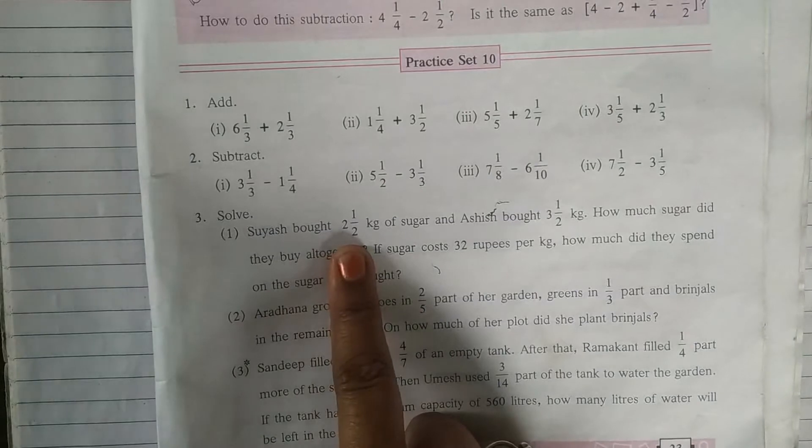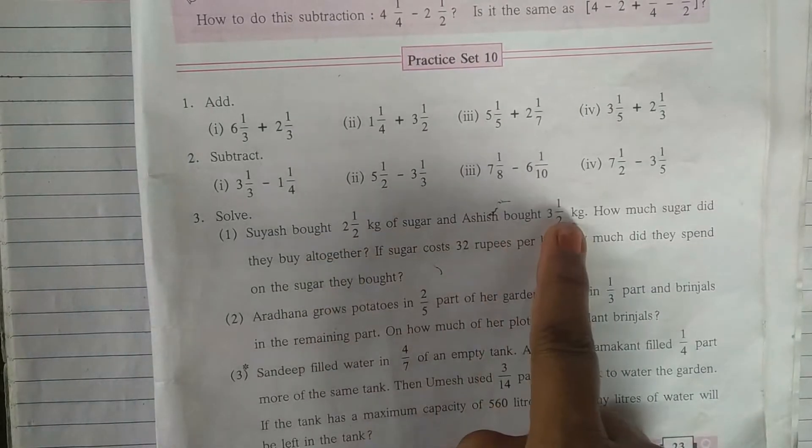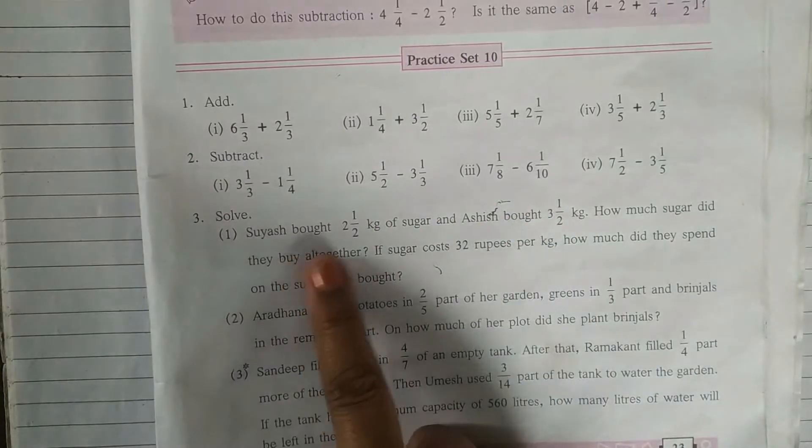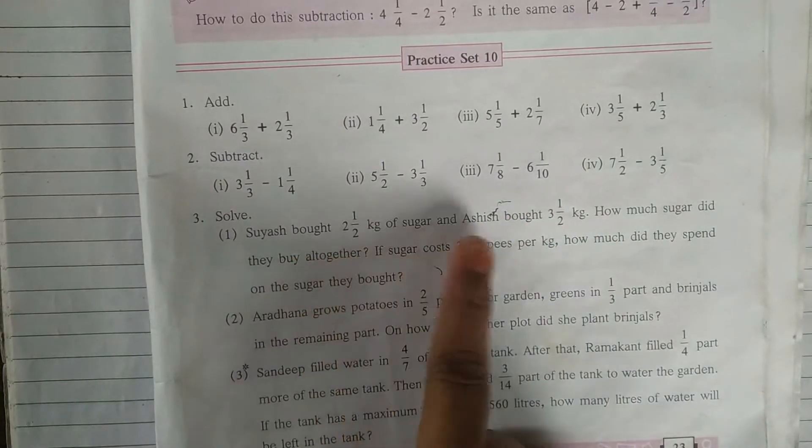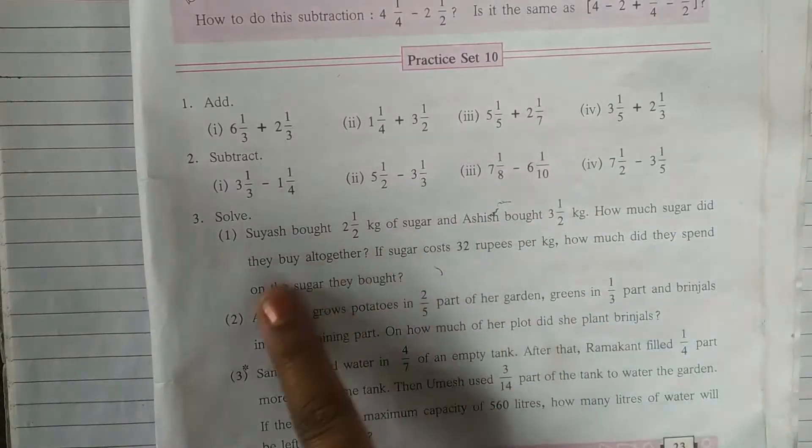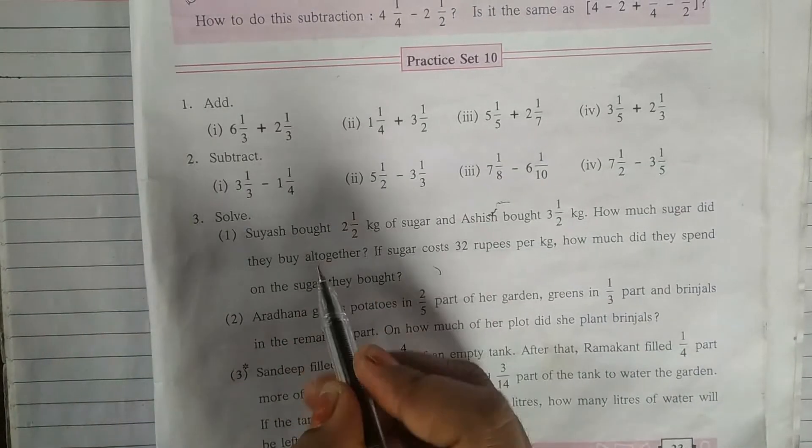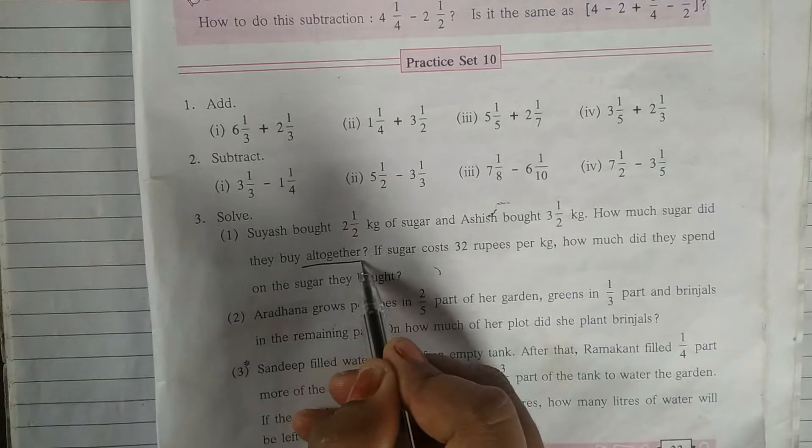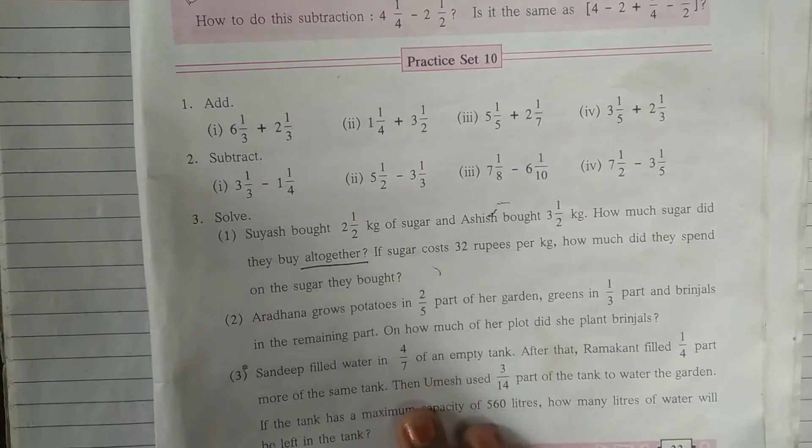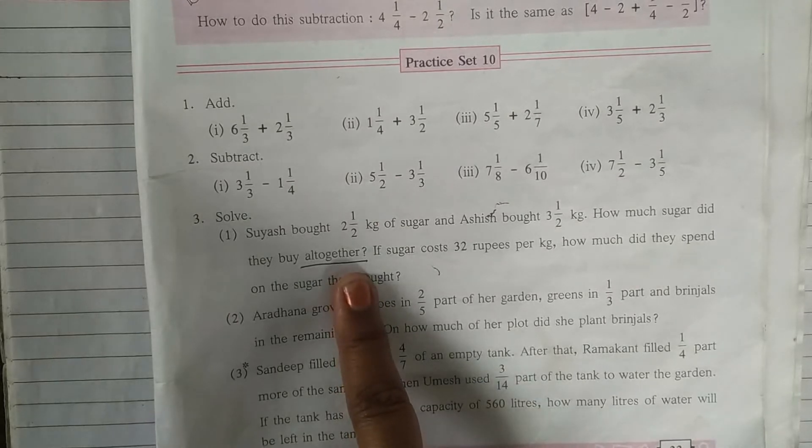Suyash brought 2 and half kg of sugar and Ashish bought 3 and half kg. How much sugar did they buy all together? See student in these word problems, you have to underline some important words which give you idea what calculation should be done for them. That's all together means here we have to do addition.